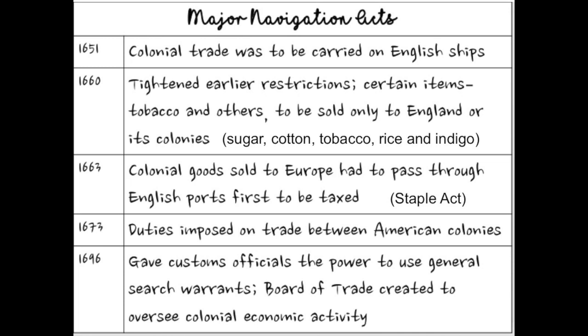In 1663, England passes the Staple Act, which says that colonial goods sold to Europe had to pass through English ports. This is a problem because it adds another stop for colonial goods, and the only reason to go through an English port is so that England can tax it. Colonists don't think this is fair — they are already paying taxes within the colonies, and now even more taxes are being enforced on their goods.